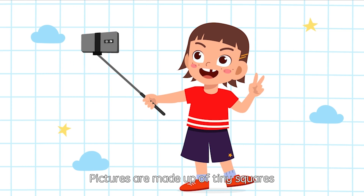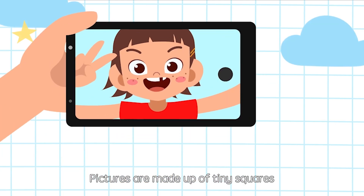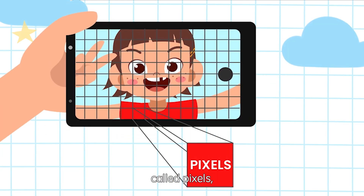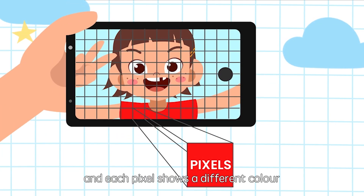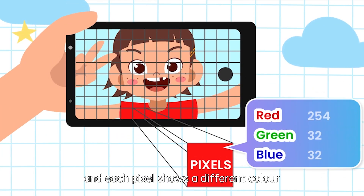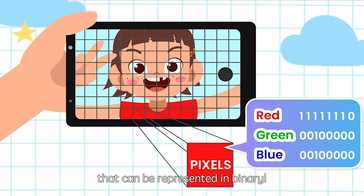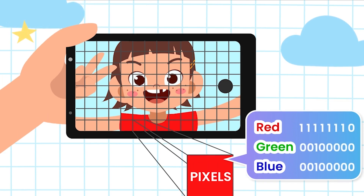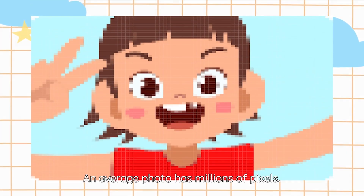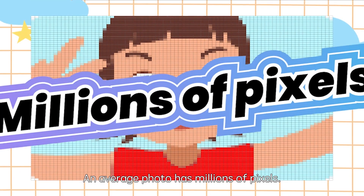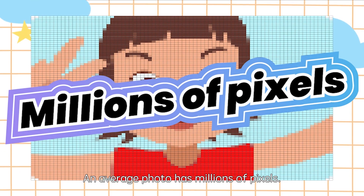Pictures are made up of tiny squares called pixels, and each pixel shows a different color that can be represented in binary. An average photo has millions of pixels!